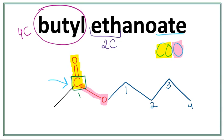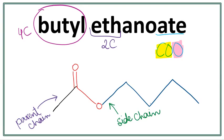Let's get rid of the numbers and the C here. This is the structure for butyl ethanoate. The side chain always attaches with the oxygen in the functional group, and the parent chain always attaches with the carbon in the functional group.